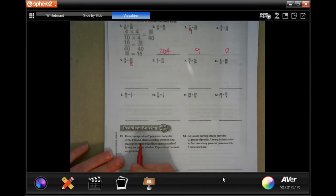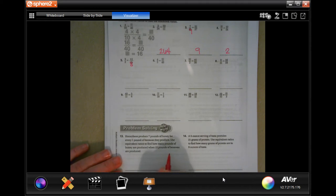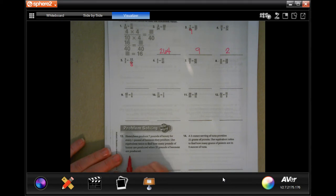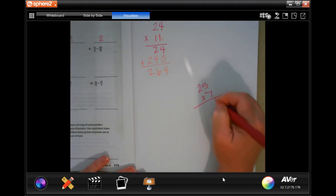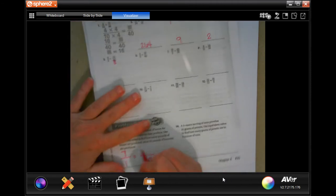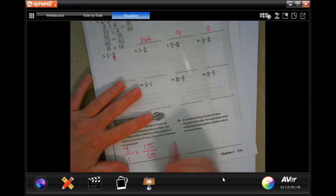Honeybees produce 7 pounds of honey for every 1 pound of beeswax they produce. Use equivalent ratios to find out how many pounds of honey are produced when 25 pounds of beeswax are produced. So for every 7 pounds of honey, 1 pound of beeswax. So if 25 pounds of beeswax, that means 1 times 25, obviously, is 25. So 7 times 25.